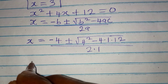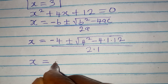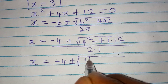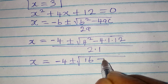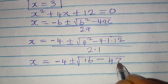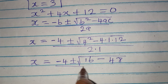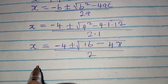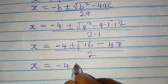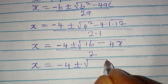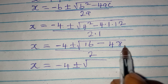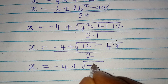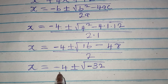Continuing, x equals negative 4 plus or minus the square root of 16 minus 48. Since 4 times 1 times 12 equals 48, we get 16 minus 48 which is negative 32. So x equals negative 4 plus or minus square root of negative 32, all over 2.